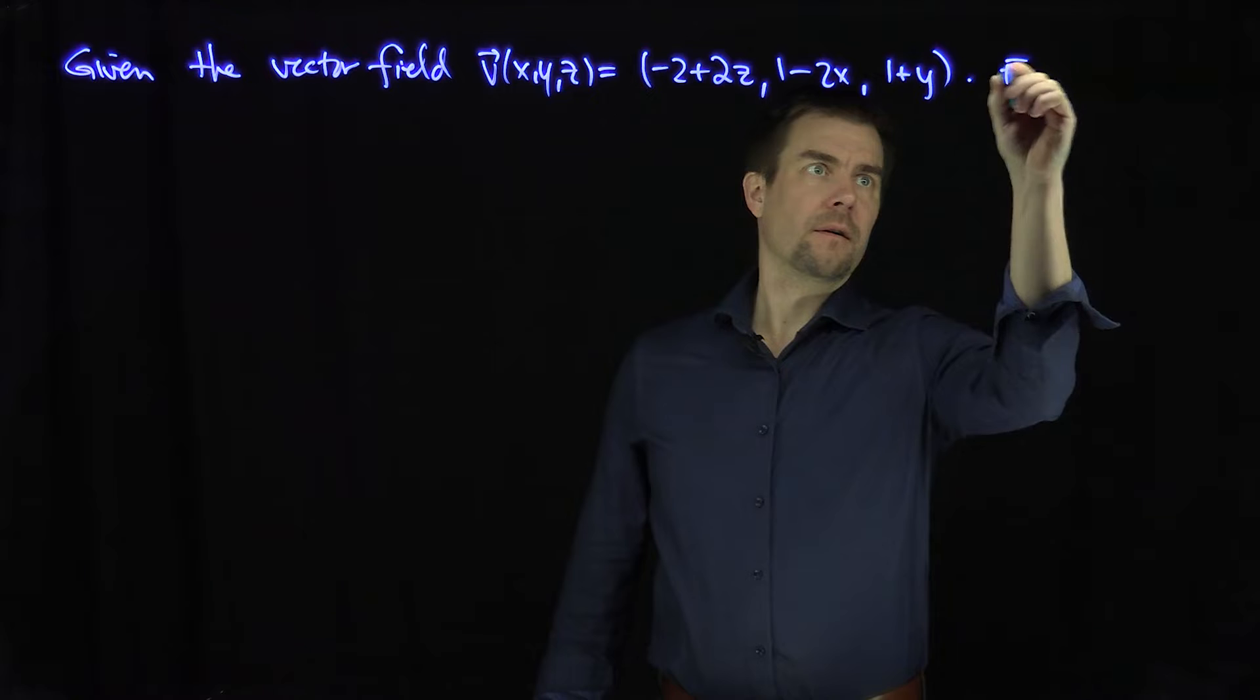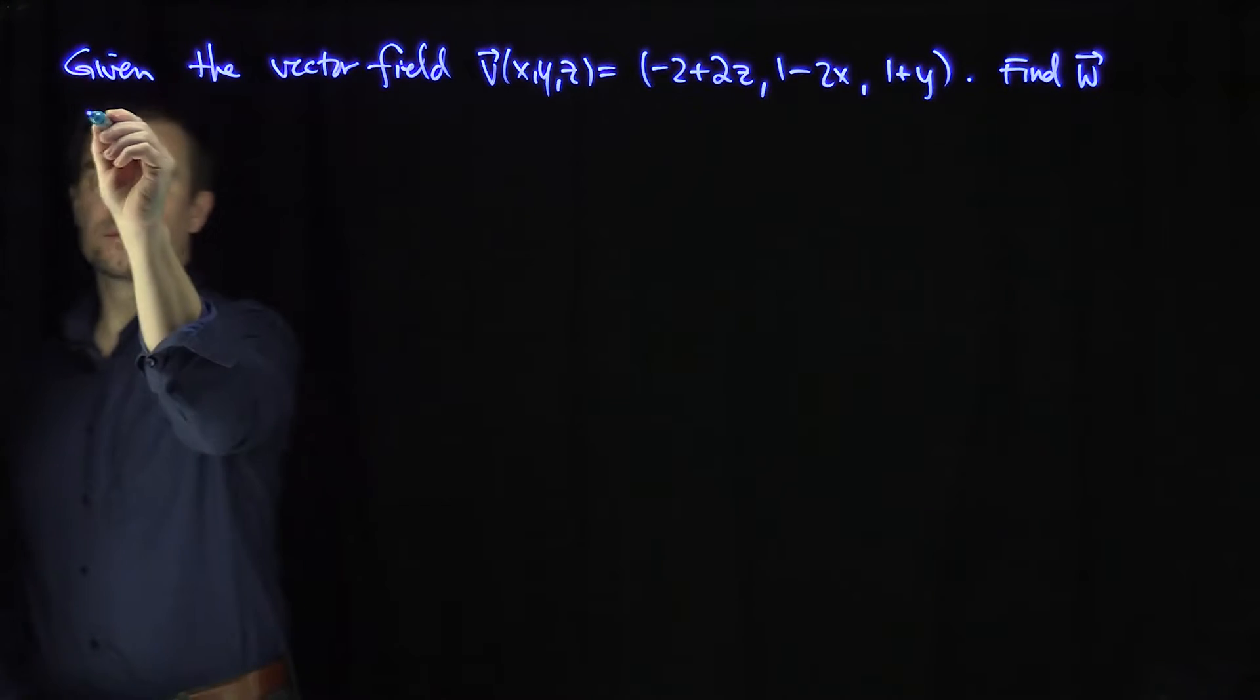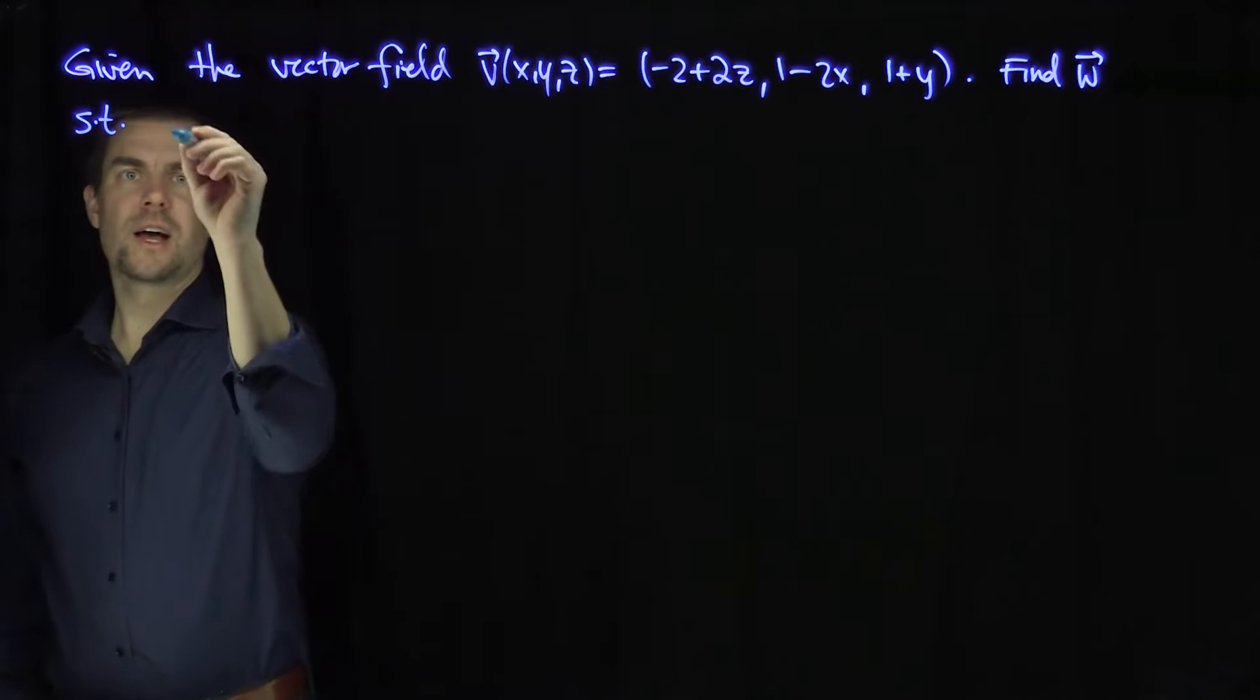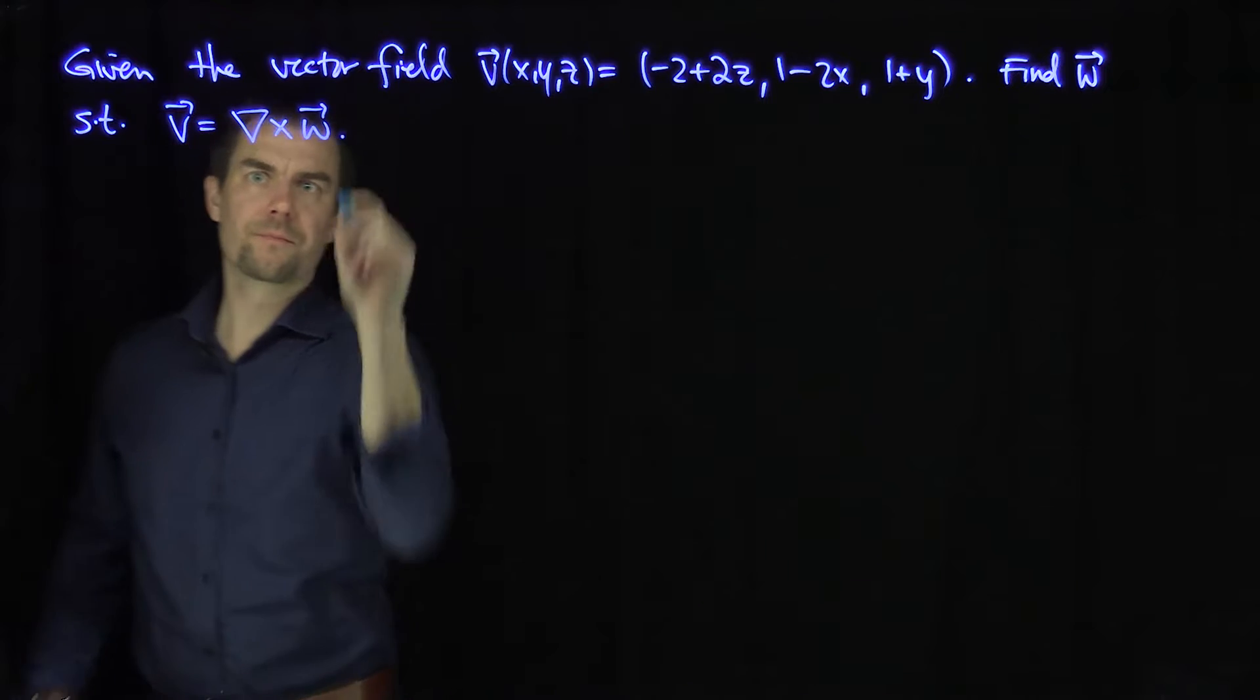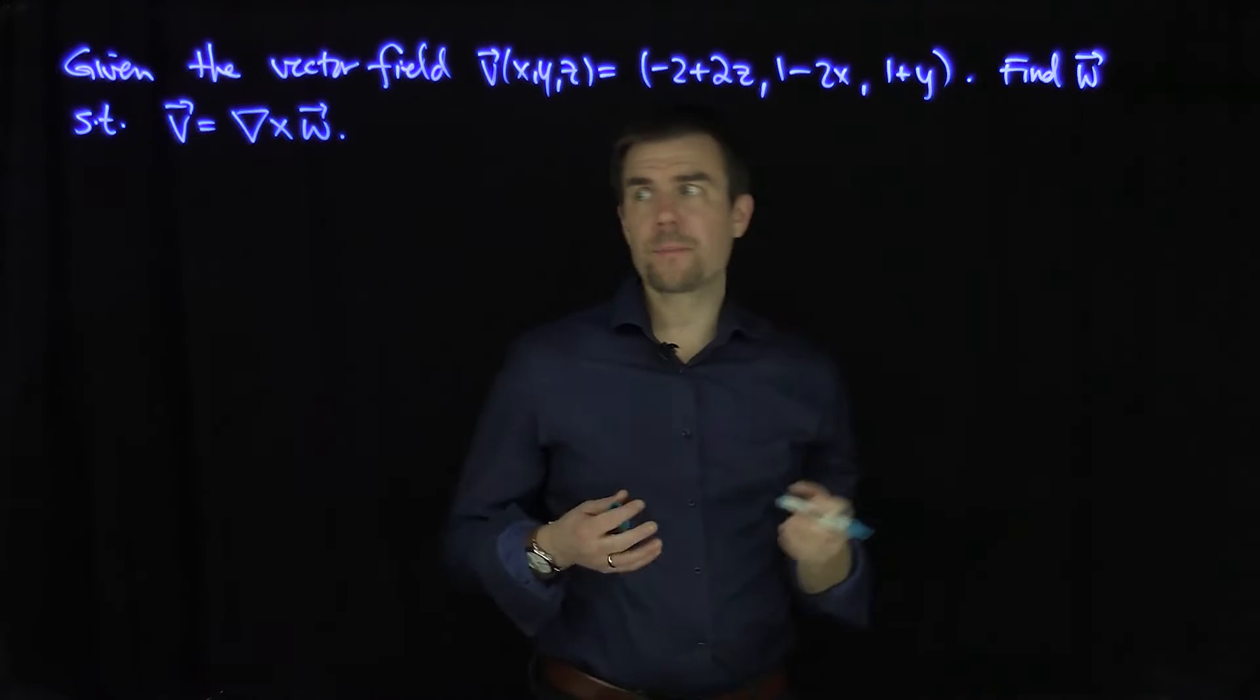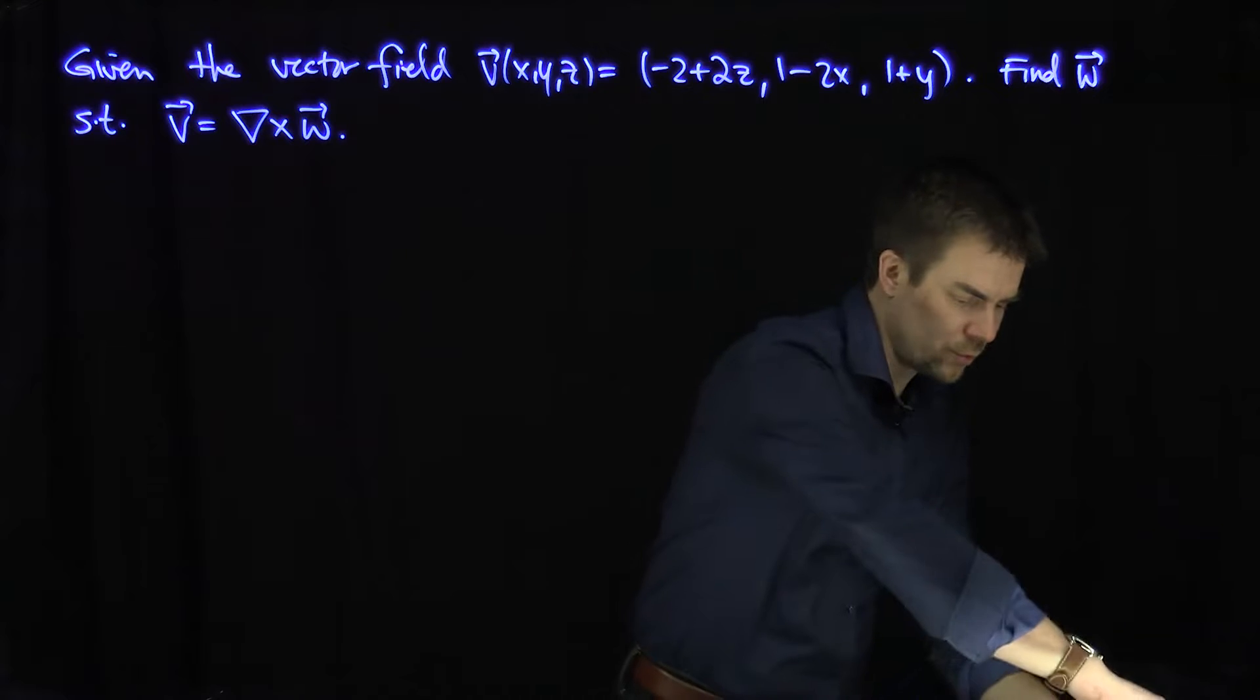Let's find a vector field w such that v is equal to the curl of w. This is only possible when the vector field v is solenoidal. So to check that v is solenoidal, we'll do the following.